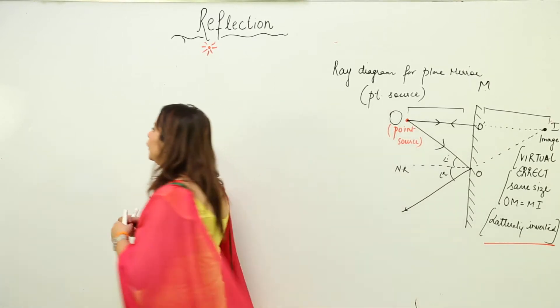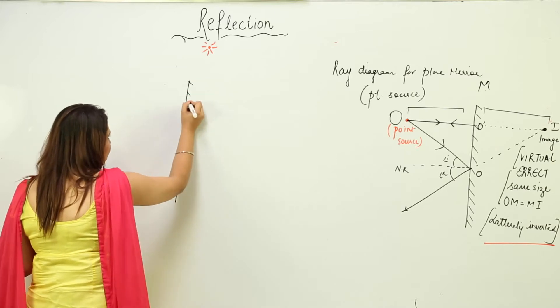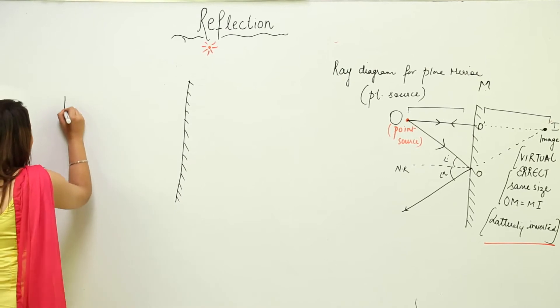Now we'll see what kind of image is formed by the plane mirror when you have a finite object. So this is my plane mirror again, a big line with small oblique lines. Let's say this is my finite object, that means of limited length.